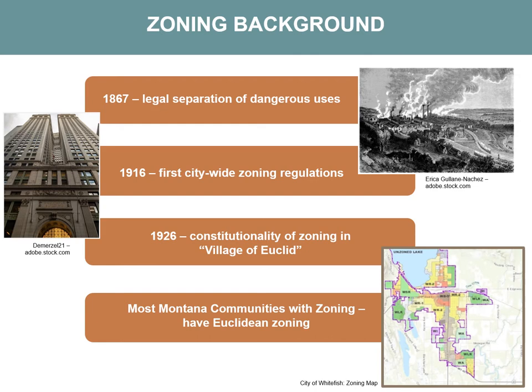In 1916, New York City adopted the first citywide zoning regulations. These regulations were a reaction to the construction of the Equitable Building, which towered over neighboring residences. The zoning established height restrictions for the entire city, expressed as ratios between maximum building height and width of adjacent streets. Residential zones were the most restrictive, limiting building height to no higher than the width of adjoining streets. The law also regulated land use, preventing factories and warehousing from encroaching on retail districts.